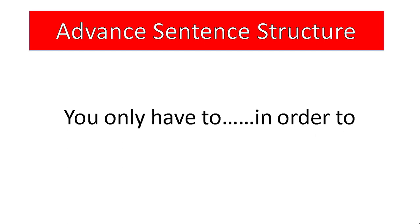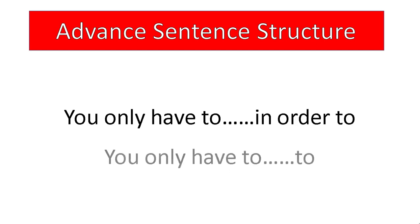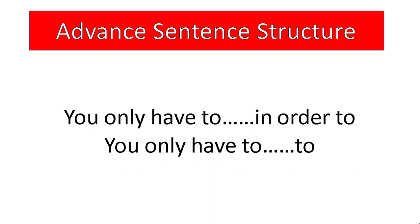The structure we use for these sentences is: 'you only have to' — then we mention the verb, the action — and after that we use 'in order to,' and then mention the result. Alternatively, instead of 'in order to,' you can also just use 'to.' So: 'you only have to [verb] in order to [result]' — or simply 'you only have to [verb] to [result].' 'In order to' means: in order to do this thing, to achieve this thing.